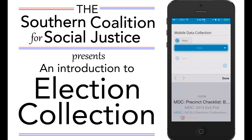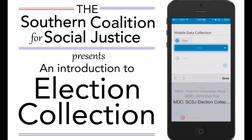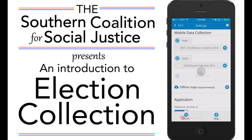This is a precinct checklist sheet that you can use to record observations of the precinct when you first arrive. The exit poll is something you can administer if you're standing outside and want to chat with voters as they leave and collect their impressions. But the most important form — the reason we're here today — is the SCSJ Election Collection form, which can record various instances of voter suppression or voting irregularities at polling places.